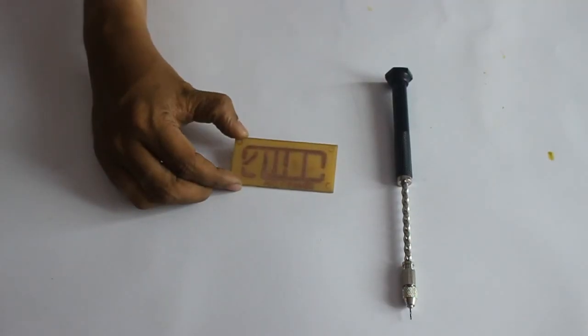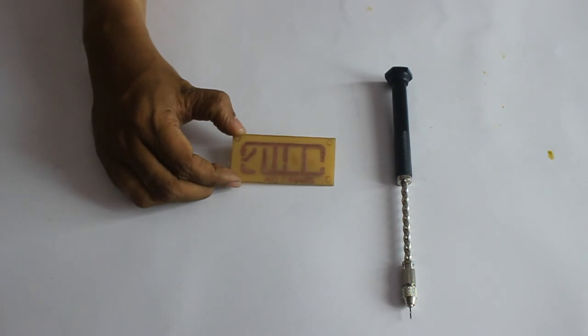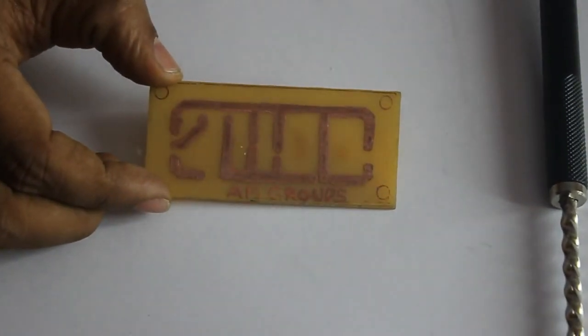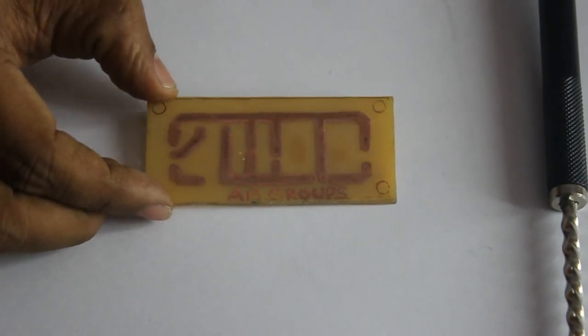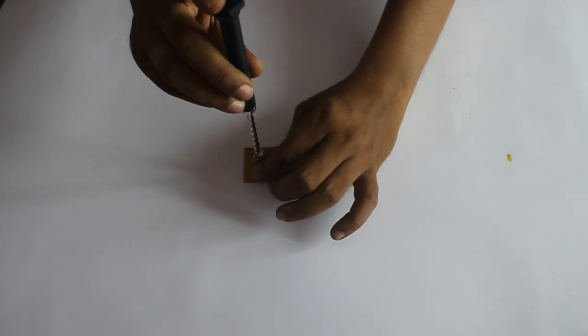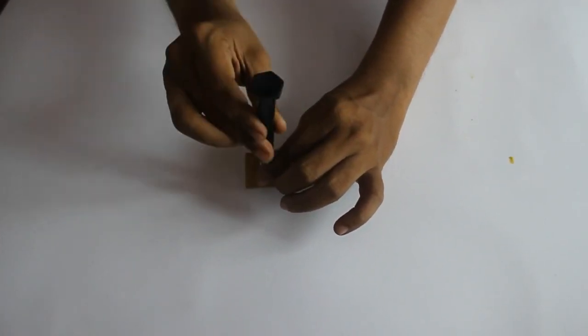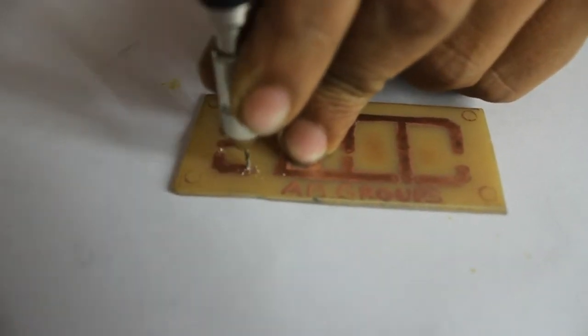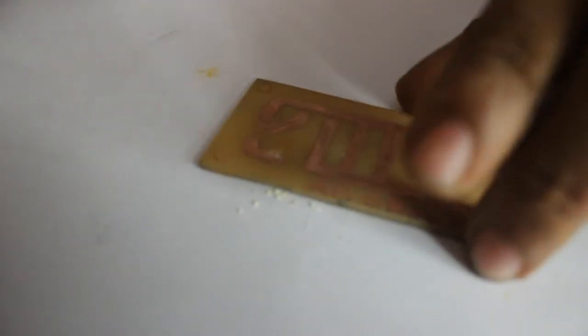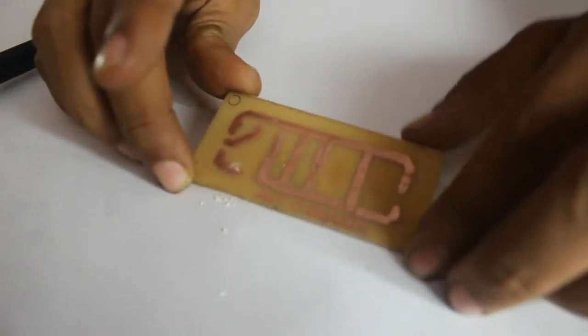Finally, after etching, the PCB looks like this. Then take the hand drill and drill the holes. This is how the PCB looks after the entire etching process is done.